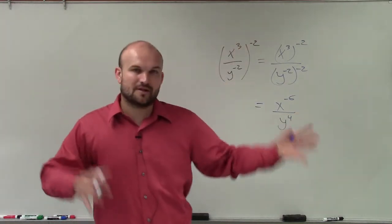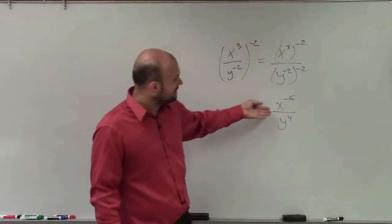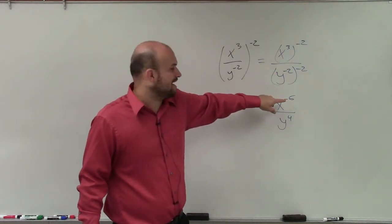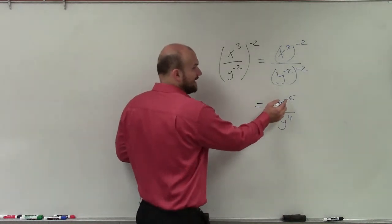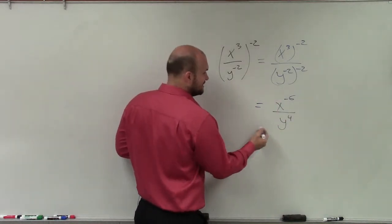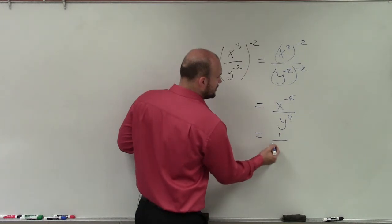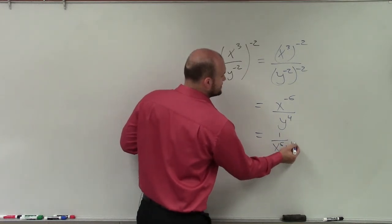It's easiest just to get rid of the parentheses first, and then you can say, all right, now the only thing I need to do is rewrite this x to the negative 6 as x to the positive 6. Well, to rewrite a negative exponent in the numerator is to rewrite it in the denominator. So that is 1 over x to the 6th y to the 4th.